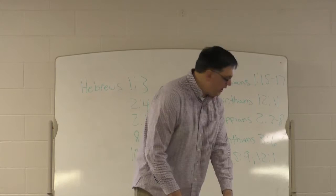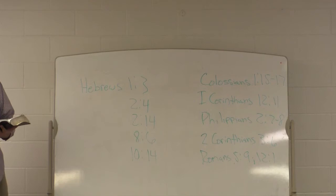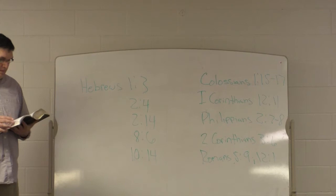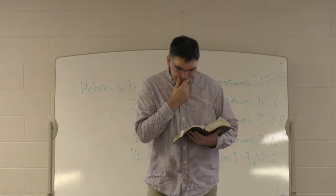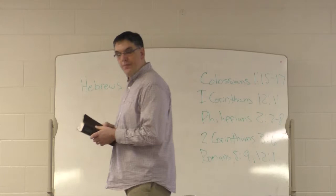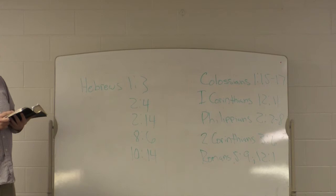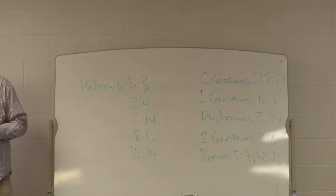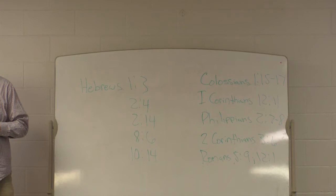Alright, Colossians 1, 15 through 17. He is the image of the invisible God. The firstborn over all creation, for by him all things were created. Things in heaven and on earth, visible and invisible, whether thrones or powers or rulers or authorities. All things were created by him for him. He is before all things and in him all things hold together.